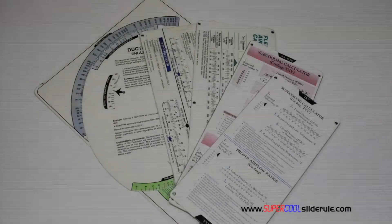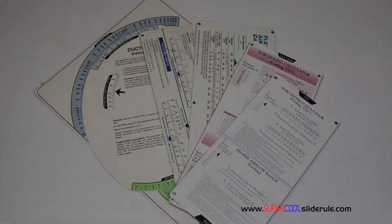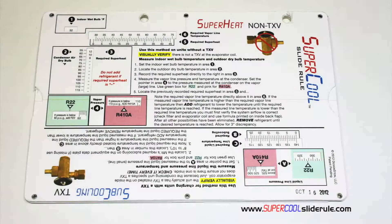Historically, technicians have carried four or five different slide rules — one for R22, one for R410A, one for metal duct sizing, one for flexible duct sizing, and yet others for diagnostics or troubleshooting. Thankfully, those days are gone.